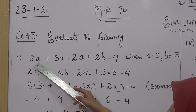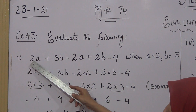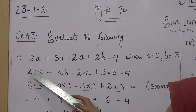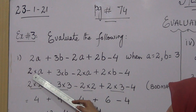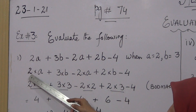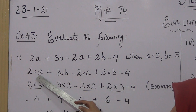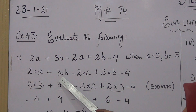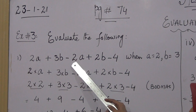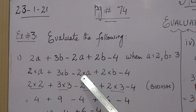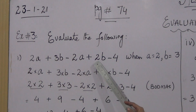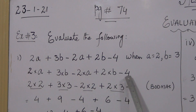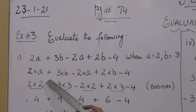Question number 1 is: 2a plus 3b minus 2a plus 2b minus 4. This expression has variables a and b. Between 2 and a there is no operator, so this means multiply: 2 multiplied by a, 3 multiplied by b, 2 multiplied by a, 2 multiplied by b — and this expression will be complete.